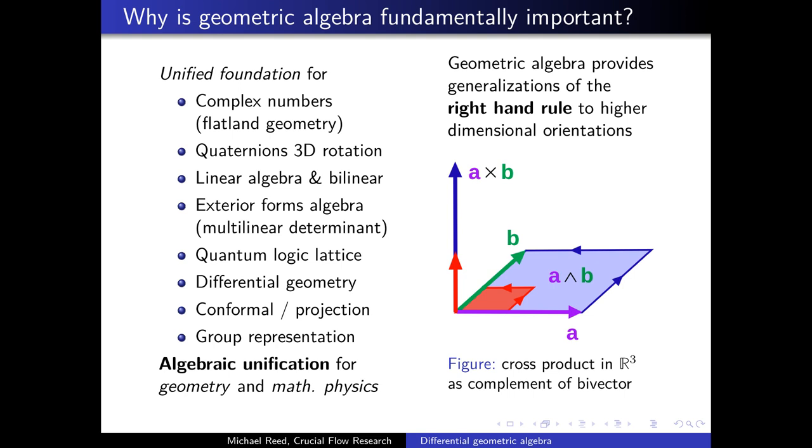Now what do all these things have in common? Geometric algebra provides generalizations of the right hand rule to higher dimensional orientations. The most prominent example we can think of is the cross product in three dimensions. We have a parallelotope volume which is constructed from two vectors into a bivector and its complement vector space.